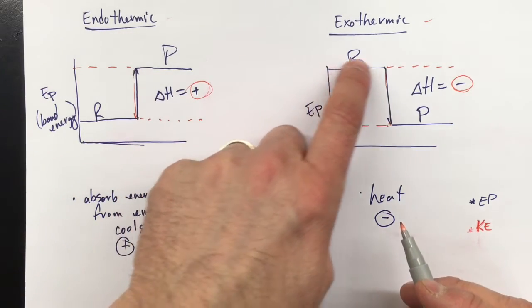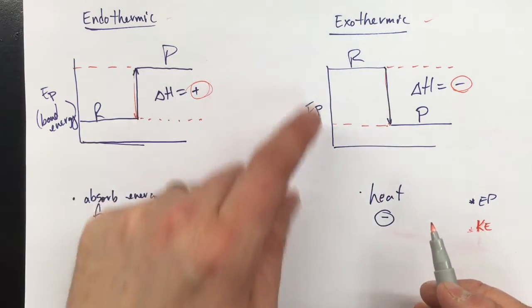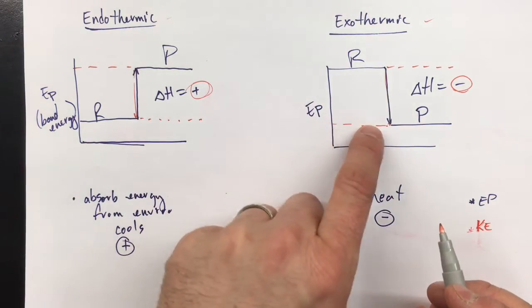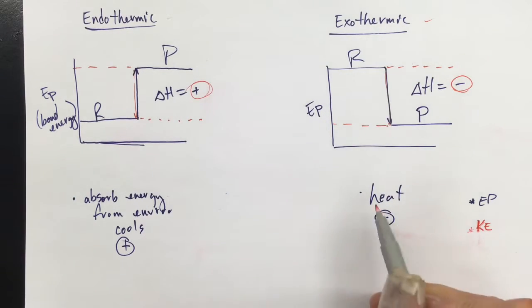If we are giving off potential energy, so the bond energy is decreasing to become the products, that energy is becoming heat for the environment, and it warms up.